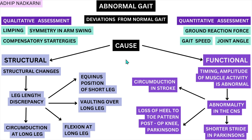To make abnormal gait really simple, it is important to understand its causes, which can be divided into two: structural causes and functional causes. First, let's look at how we can assess gait. Gait can be assessed by qualitative assessment and quantitative assessment. Qualitative is basically what you observe and describe — for example, when you see a person limp you can see there is improper weight distribution, but you don't know exactly how much.